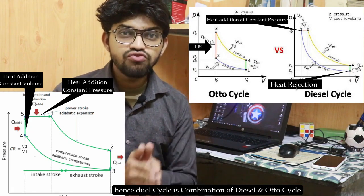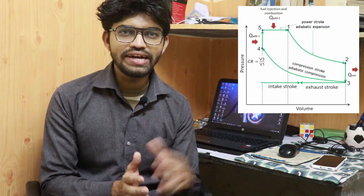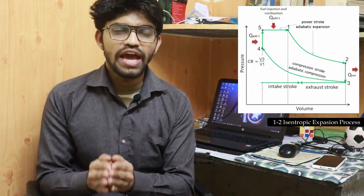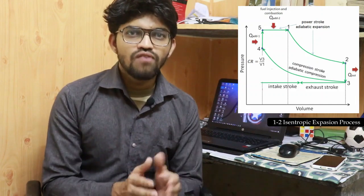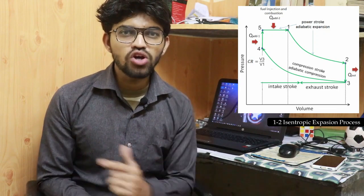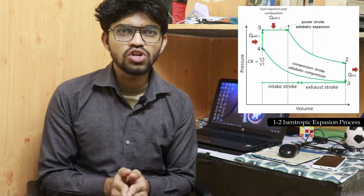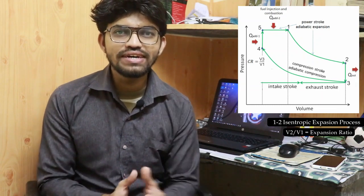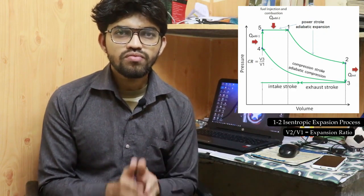Now let's look at the five processes in the dual cycle. Process 1 to 2 is the same as in the Otto and Diesel cycles — that is the isentropic (constant entropy) expansion process. No heat addition takes place during this process; the piston moves from top dead center to bottom dead center, so volume increases. The ratio v2/v1 is the expansion ratio for this process.